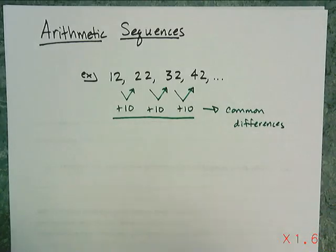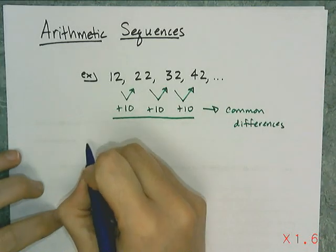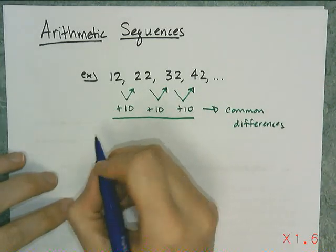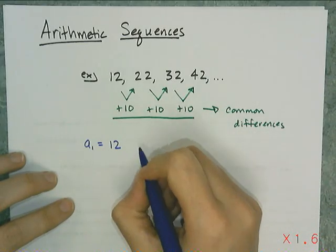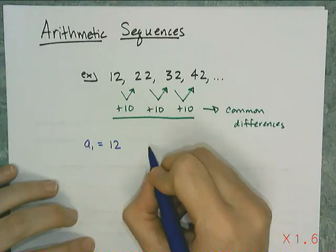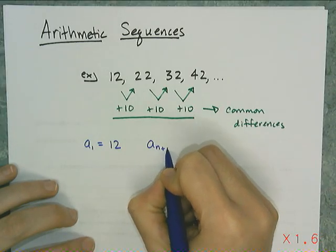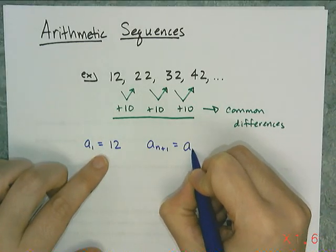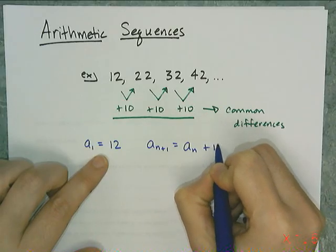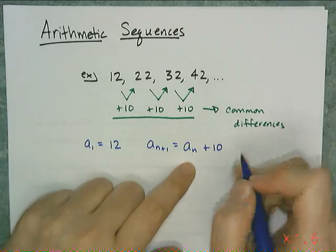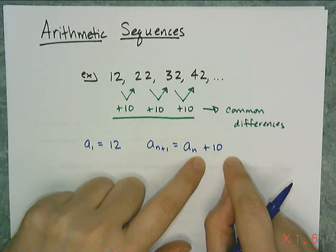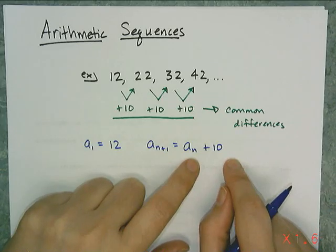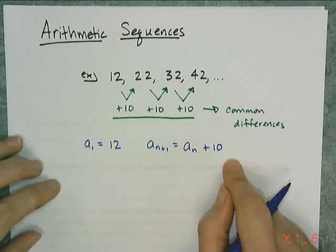With these sequences I can do many things. I can first write a recursive rule for it, just like I do for geometric ones. I have to have my start-with value, which is 12. And then I have to figure out what procedure I have to do to get the next term. So a sub (n+1) is equal to the previous term, a sub n, plus 10. The only difference with these recursive rules is that I just have to change from multiply in the geometric to a plus in an arithmetic one.